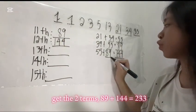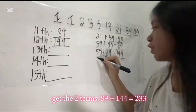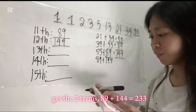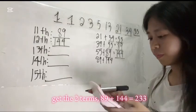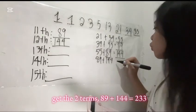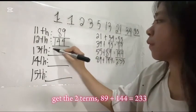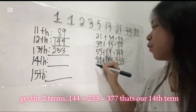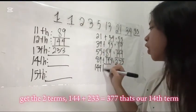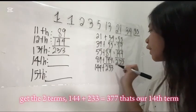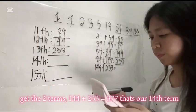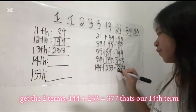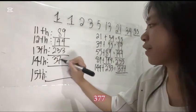Get the two terms. 89 plus 144 equals 233. Get the two terms. 144 plus 233 equals 377. That's our 14th term, 377.